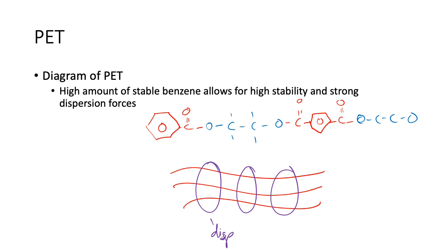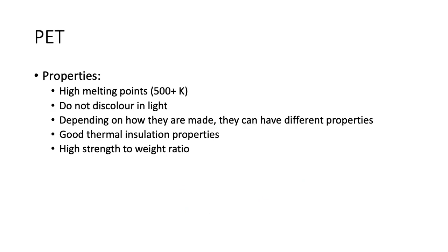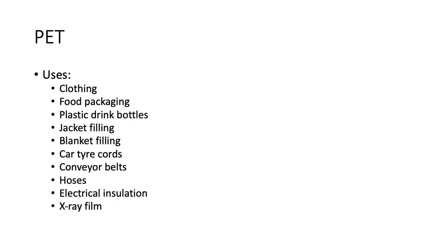Because of the high molecular mass of the benzene ring, PET has a high melting and boiling point. It doesn't discolor in light because it's quite stable due to the benzene ring. Depending on how it's made, it can have different properties, including good thermal insulation and a high strength-to-weight ratio.